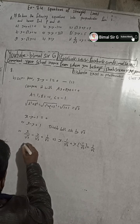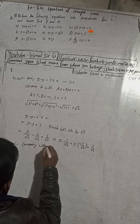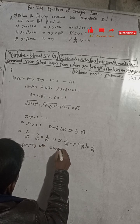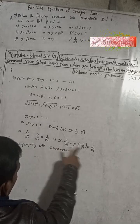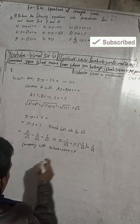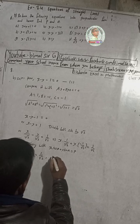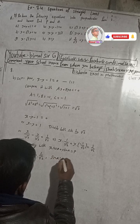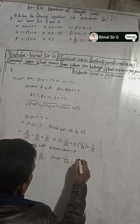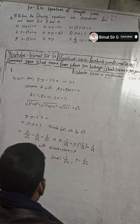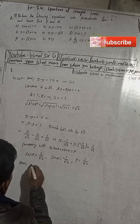Now comparing this with the normal form x cosα plus y sinα equals p, we get: cosα equals 1 by root 2, sinα equals minus 1 by root 2, and p equals 1 by root 2.